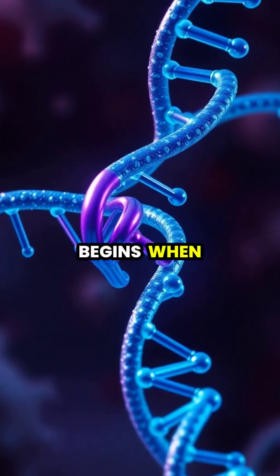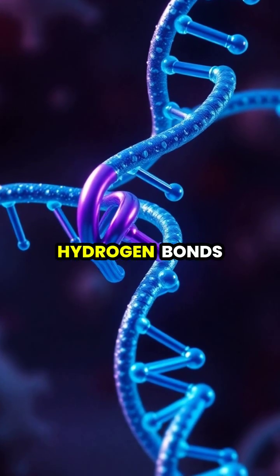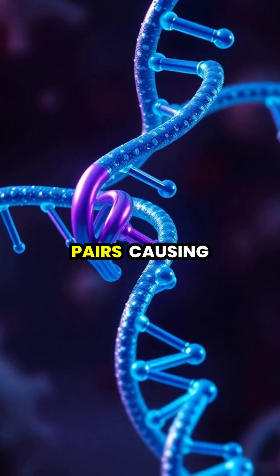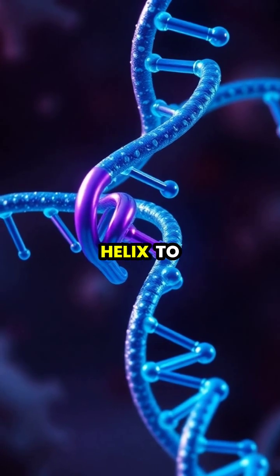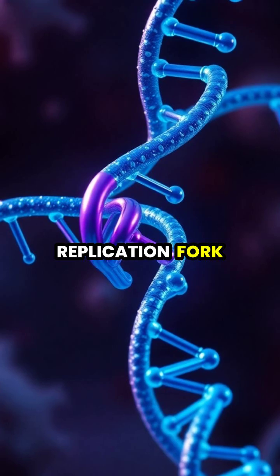The process begins when an enzyme called helicase breaks the hydrogen bonds between base pairs, causing the double helix to unwind and creating a replication fork.